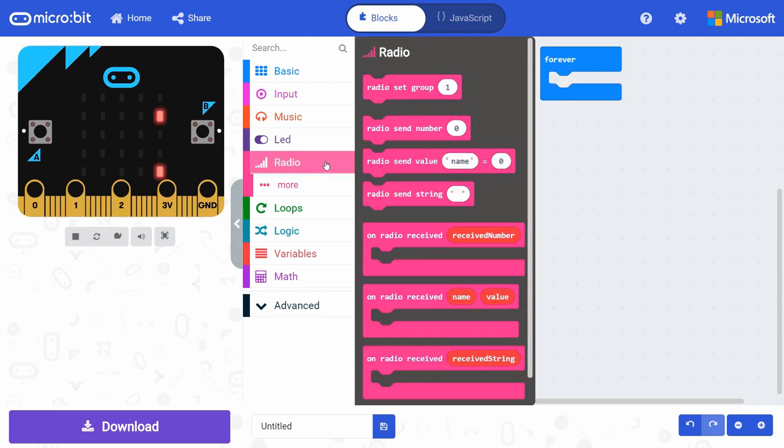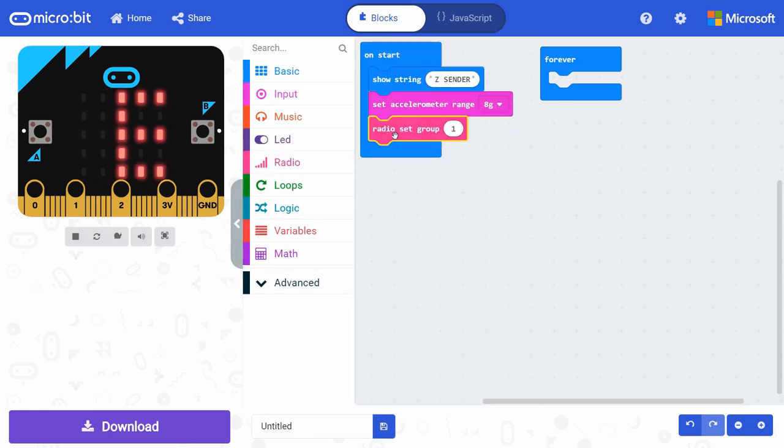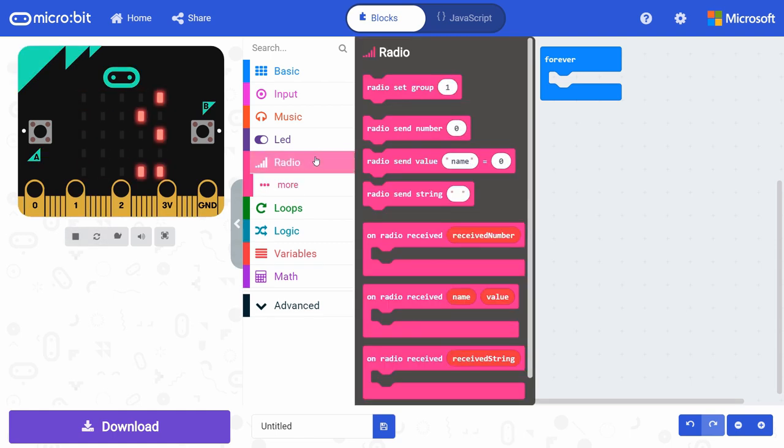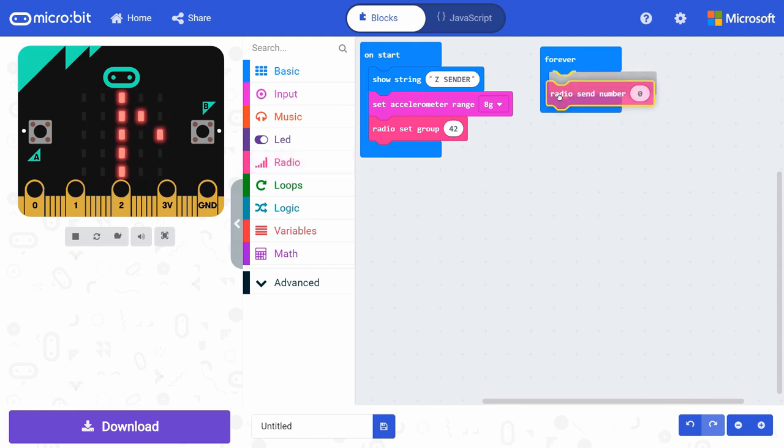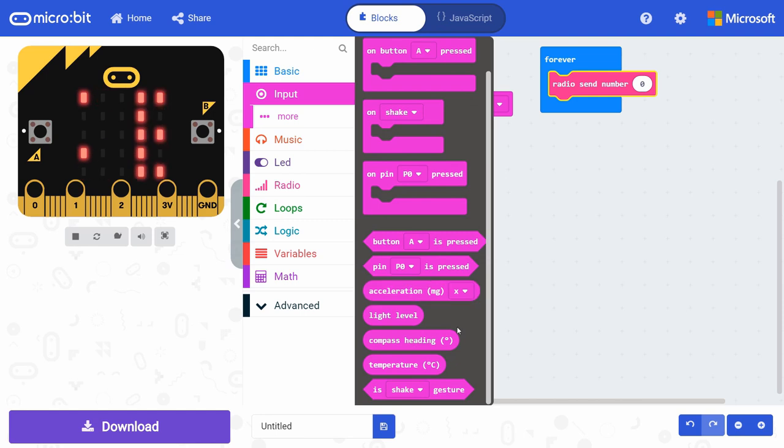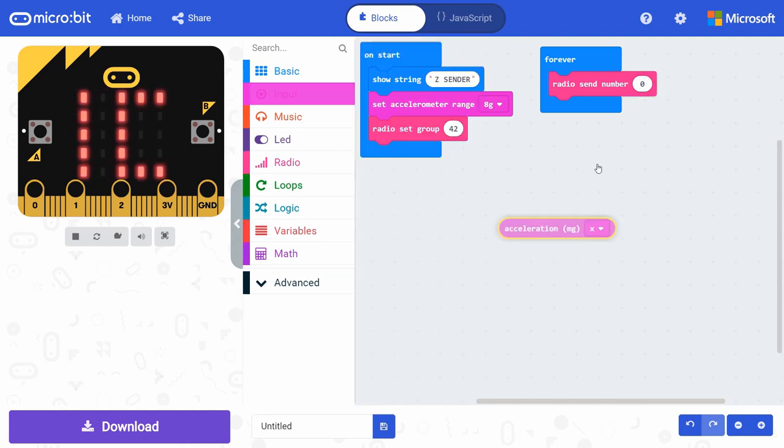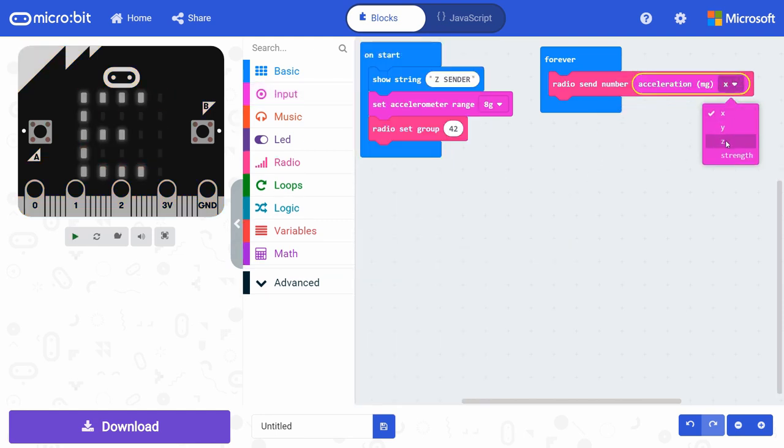Then get a radio set group number from radio and snap it under set accelerometer range. Change the radio group to something you'll remember, like 42. Finally, get a radio send number block from radio and put it in the forever block. Get an acceleration block from input and snap it in the radio send number block. Change the axis to z. Give your project a name, like sender, and download it to your micro bit.